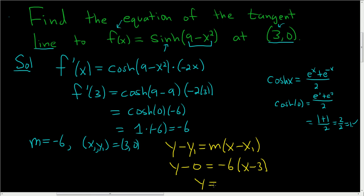So y equals negative 6x plus 18, right? Negative 6 times negative 3 is positive 18, and that's it.